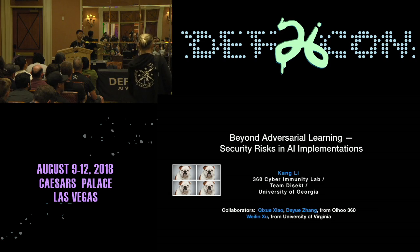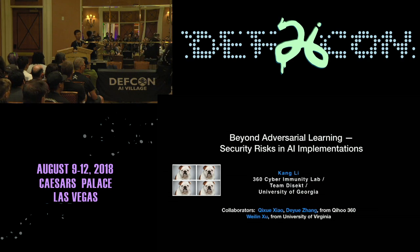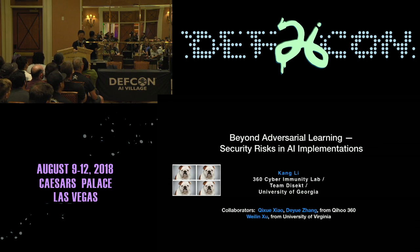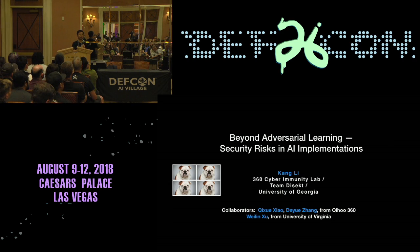This is work done jointly with a couple of people from Qihoo 360 and Wei-Lin from the University of Virginia — four authors total. We had a paper published at the IEEE Security and Privacy Workshop on Deep Learning and Security in May, so this talk is pretty much the same content.